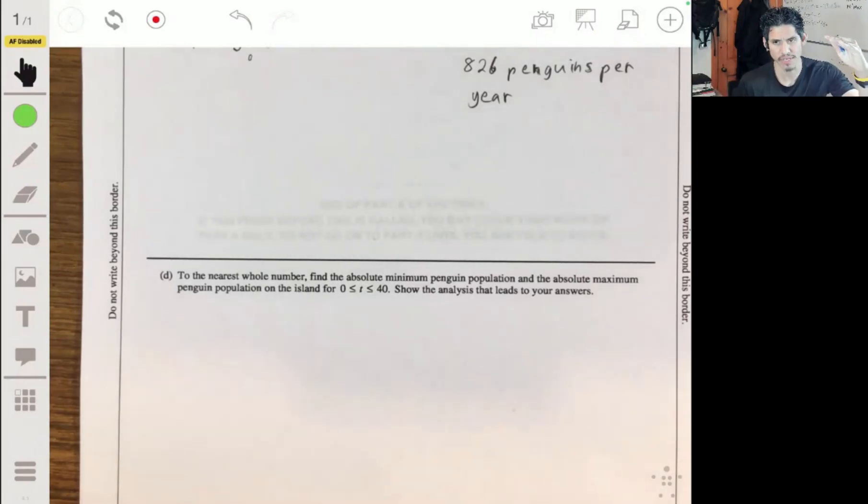It will reach an absolute minimum after the death rate exceeds the birth rate for a while. It depends on the graph. Vice versa, it will reach a maximum if the birth rate continuously exceeds the death rate. Let's just bust out a graphing calculator or technology so we can see it more clearly.